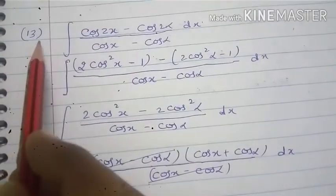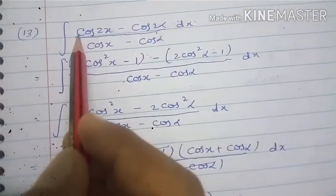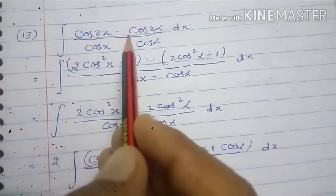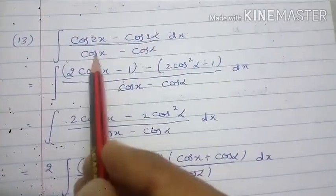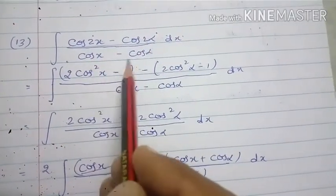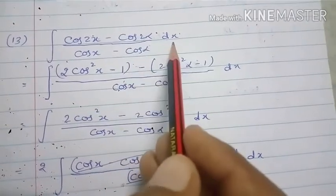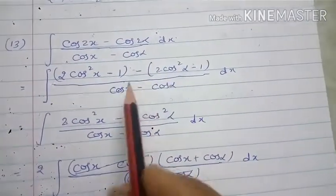In this question we have to integrate (cos2x - cos2α) divided by (cosx - cosα) dx.